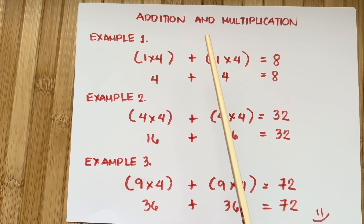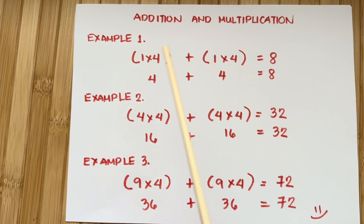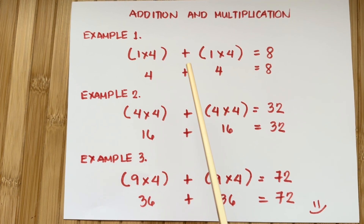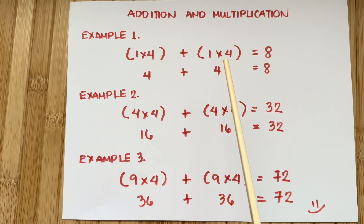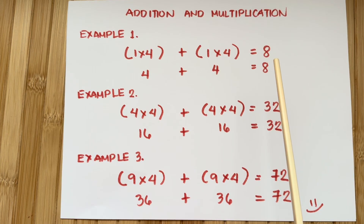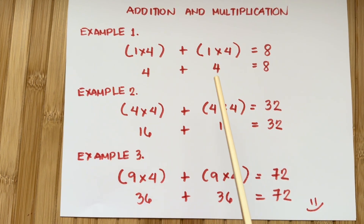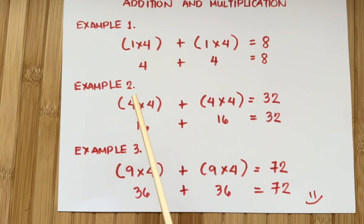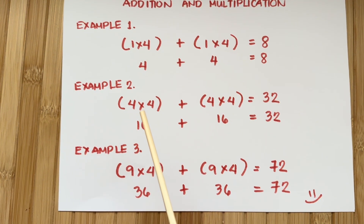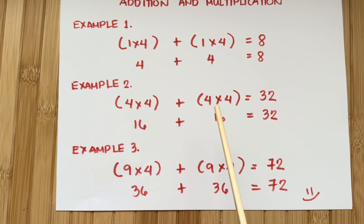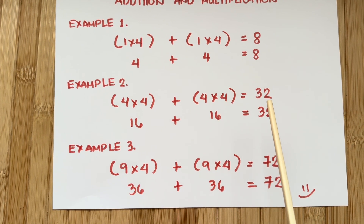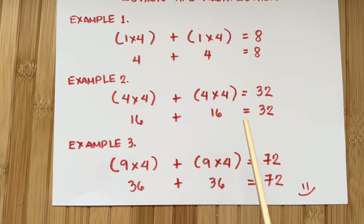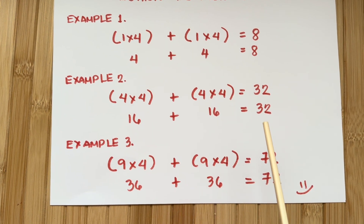Let's summarize. Example number 1: 1 times 4 plus 1 times 4 is equals to 8, or 4 plus 4 is equals to 8. Example number 2: 4 times 4 plus 4 times 4 is equals to 32, or 16 plus 16 is equals to 32.